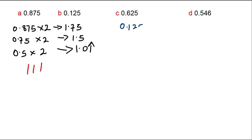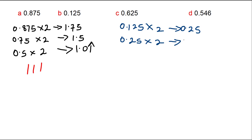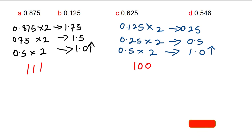With 0.125 we multiply by 2 like we did in the previous example. 0.125 by 2 is 0.25. We pick 0.25 and multiply it by 2. 0.25 by 2 is 0.5. Then 0.5 by 2 is 1.0. Writing from bottom to top, least significant bit to most significant bit, 0.125 in binary is 0.001.